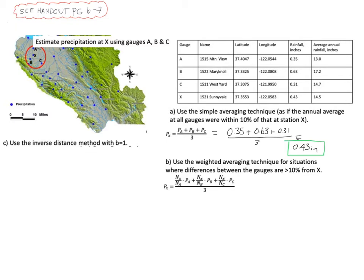So I'm going to pause it here and write out the equation and then I'll come back in a second. Okay. So we have 14.5 divided by 13 times 0.35 plus 14.5 divided by 17.2 times 0.63, where that 17.2 is the annual average at site B and the 0.63 is the rainfall for the storm at gage B. And then we add to that 14.5 divided by 14.7 times 0.31, where that 14.7 is the average annual for point C and the 0.31 is the current rainfall at the storm for point C.